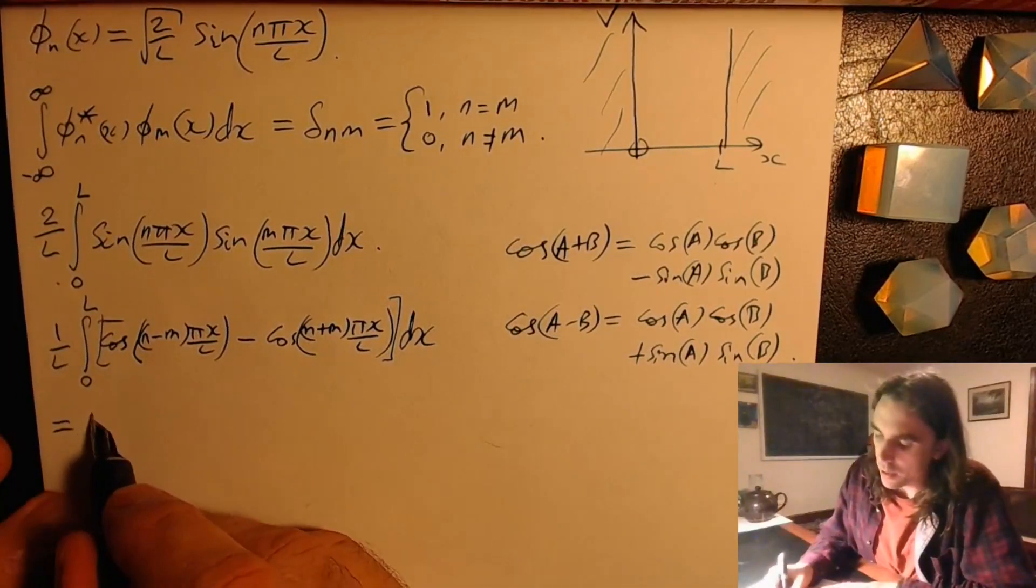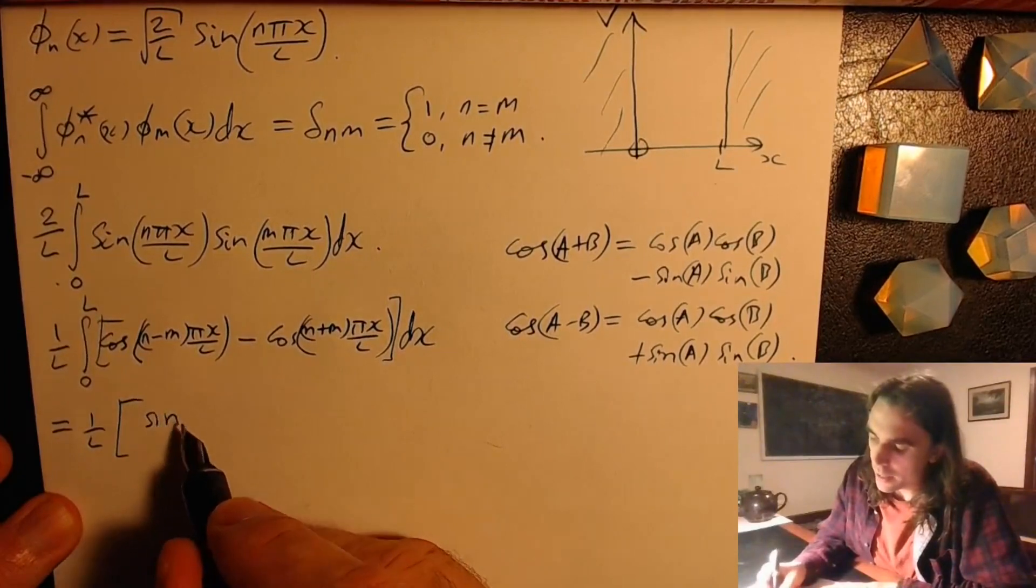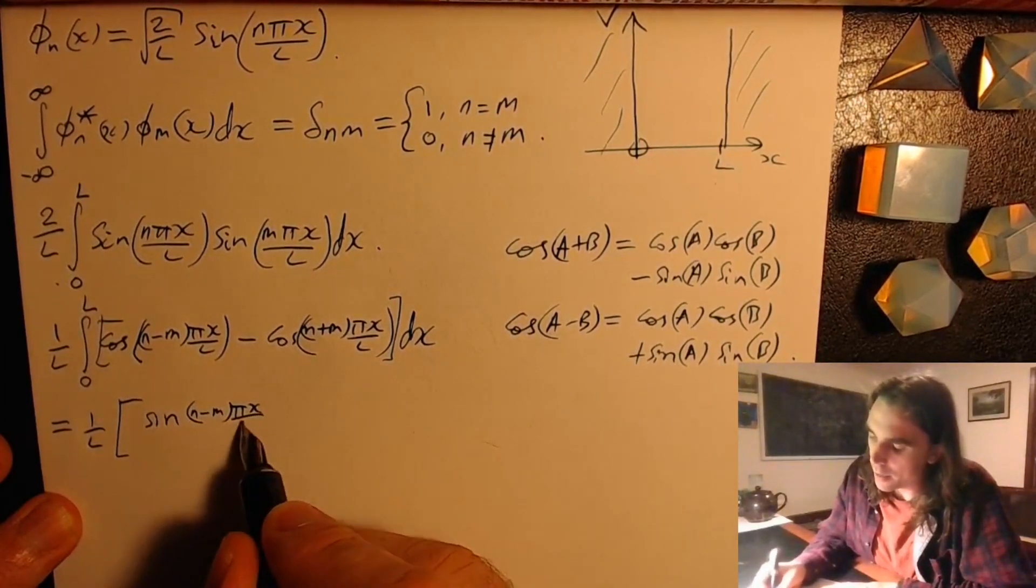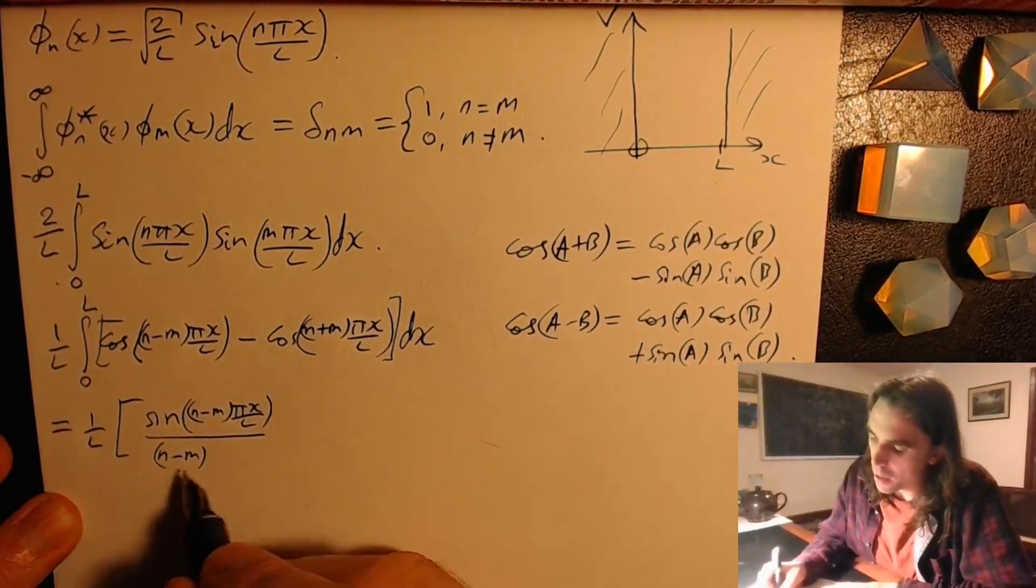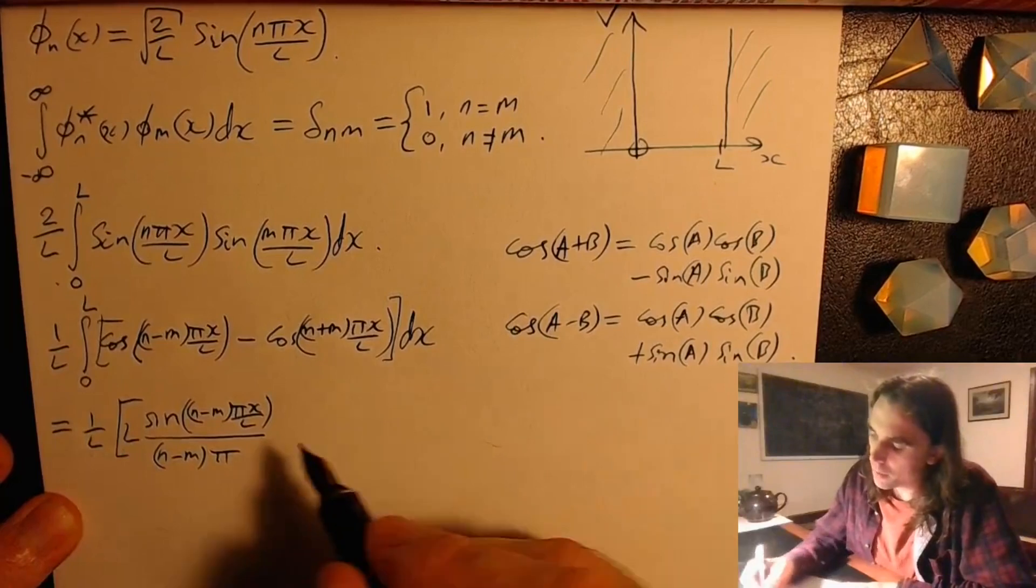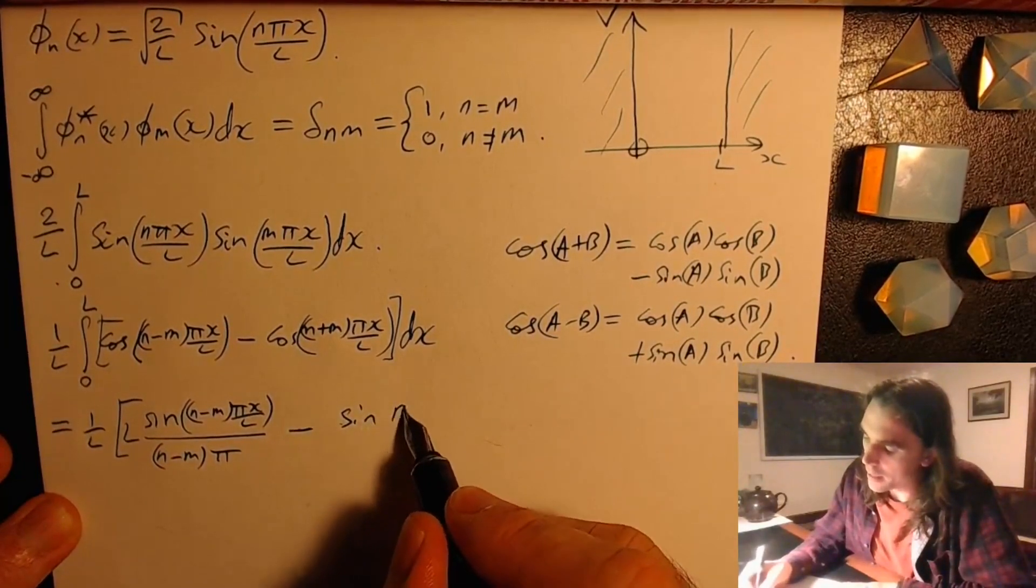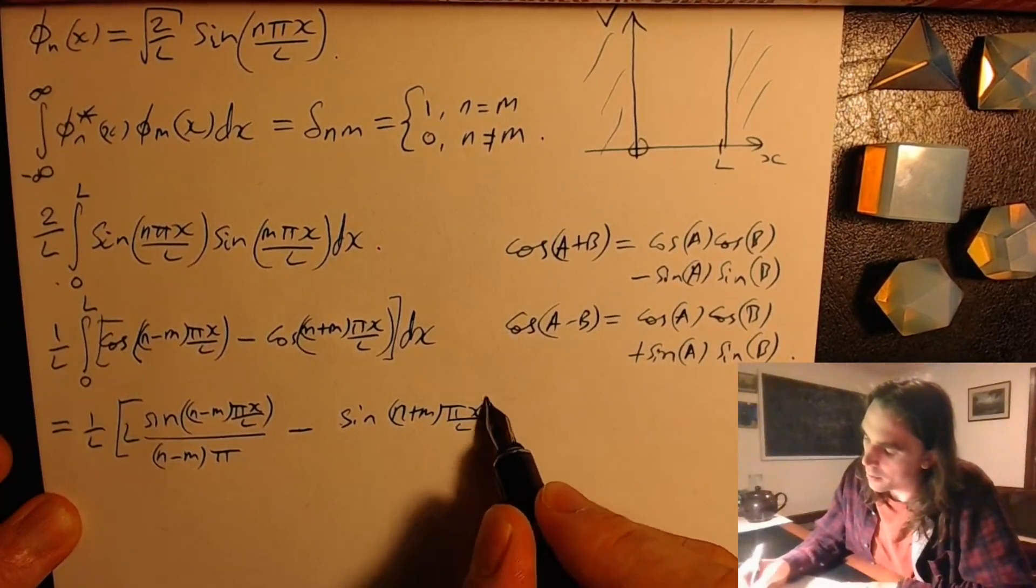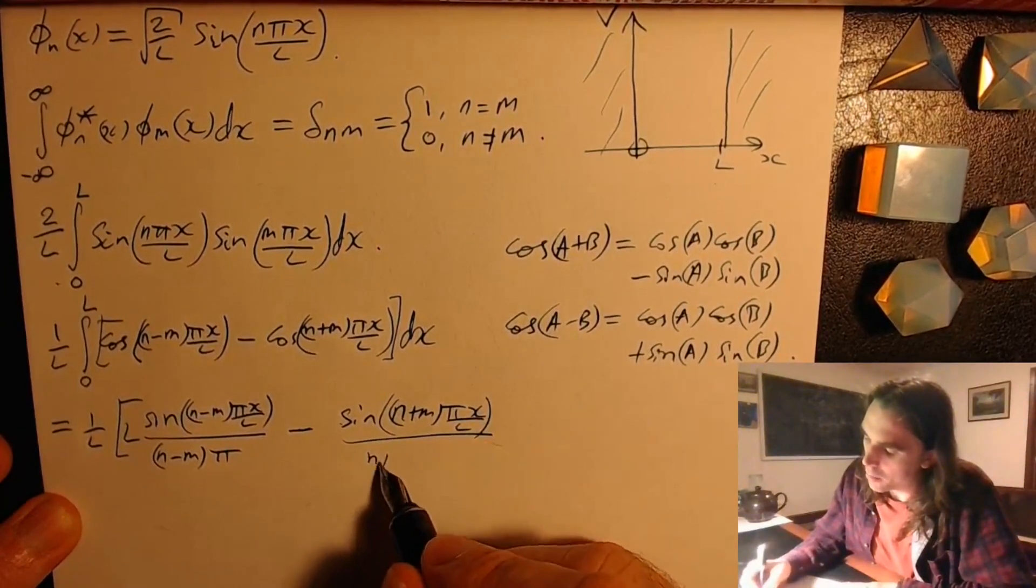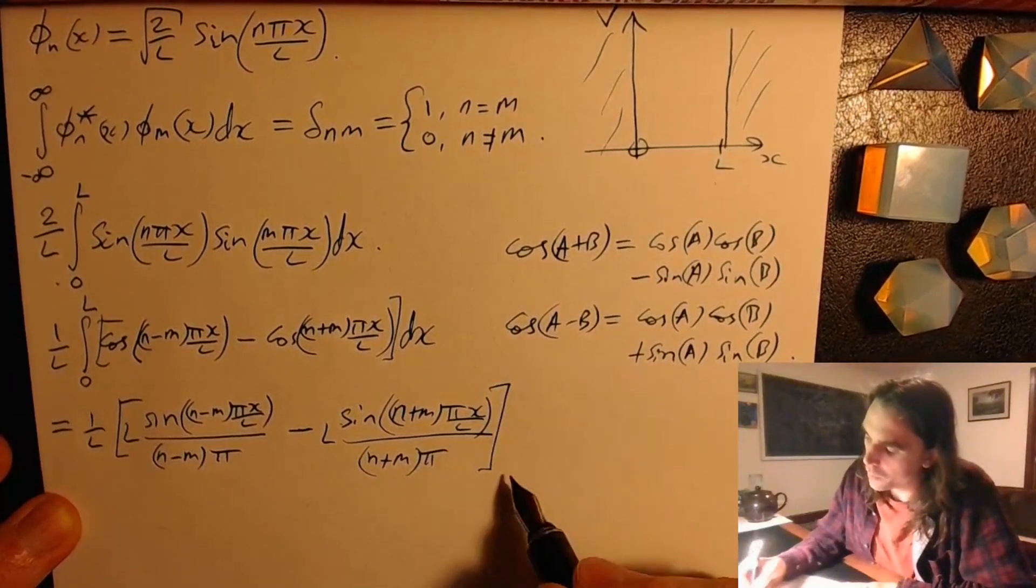This integrates to, these will become sines. sin of n minus m pi x over L, divided by n minus m pi, and multiply by L, minus sin of n plus m pi x over L, divided by n plus m pi, multiply by L, between zero and L.